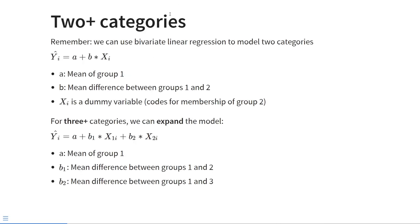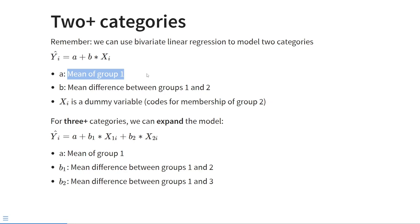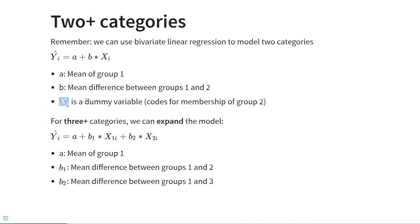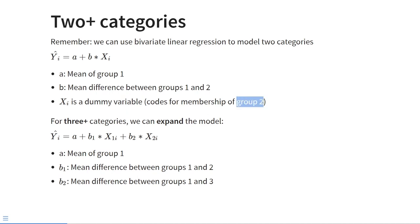Recall that we can use bivariate linear regression to model two categories. The regression formula states that the predicted value ŷ_i equals an intercept plus a slope times individual values on predictor x. With dummy coding, the intercept a is the mean of the reference category, the slope b gives the mean difference between groups 1 and 2, and x_i is a dummy variable coding for membership of group 2 — scoring 1 for group 2 and 0 for group 1.